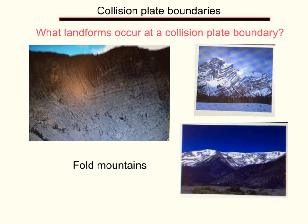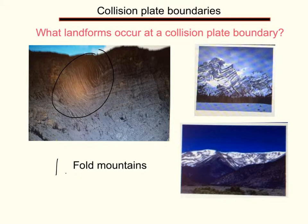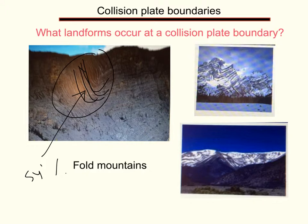The next thing to consider is what landforms are found at a collision plate boundary. There is one, and this is fold mountains. We call them fold mountains because there are folds in the rocks. A down-fold is called a syncline, and where the rocks fold upwards — such as on the second picture where you can see the rocks folding upwards — that is called an anticline.